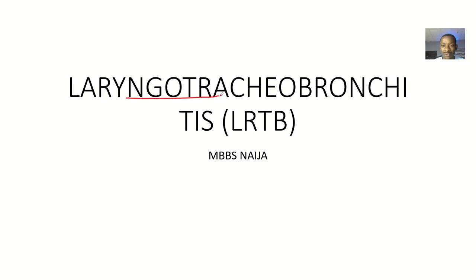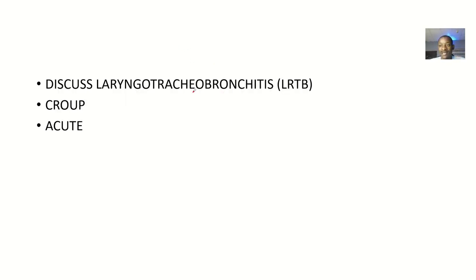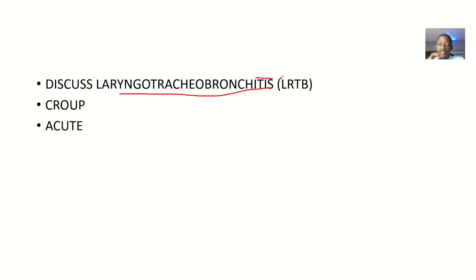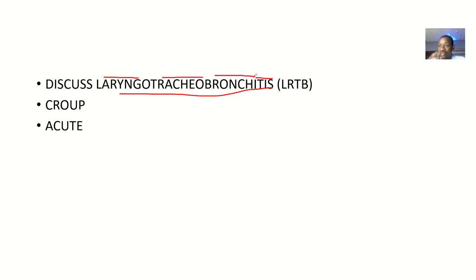We'll be talking about laryngotracheobronchitis. If you have a word like this, try to break it down. 'Itis' means inflammation of that structure. Breaking it apart: 'laryngo' is the larynx, 'tracheo' is the trachea, and 'bronchi' is the bronchi. So that means there's inflammation of the larynx, the trachea, and the bronchus.